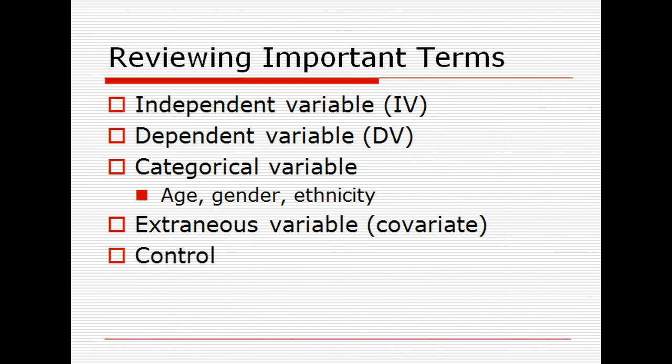There are also categorical variables. Sometimes you want to examine the effect of age, gender, or ethnicity in programs. Extraneous variables, also called a covariate, are something you may need to take out and hold constant. And then of course your control condition — a condition that doesn't get the treatment. That's a placebo, or in Ryan's case, it's the education-only condition.